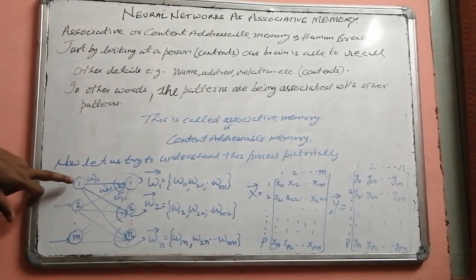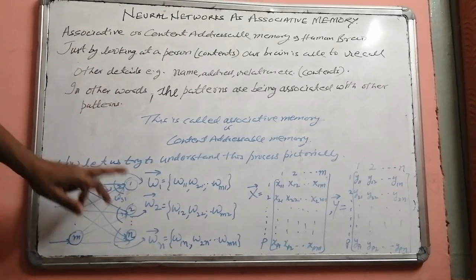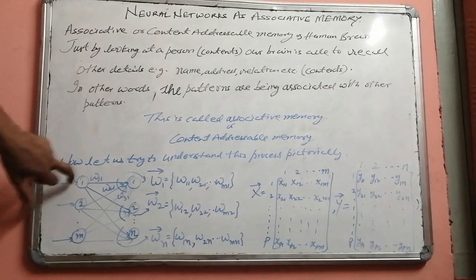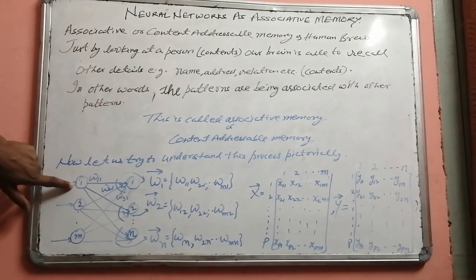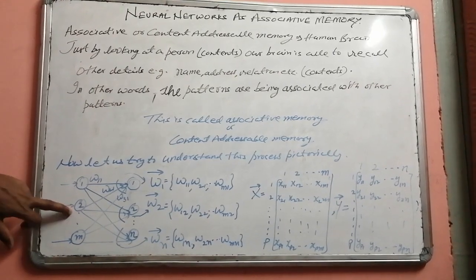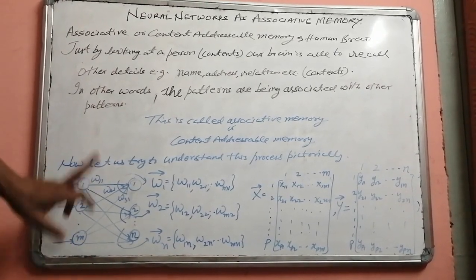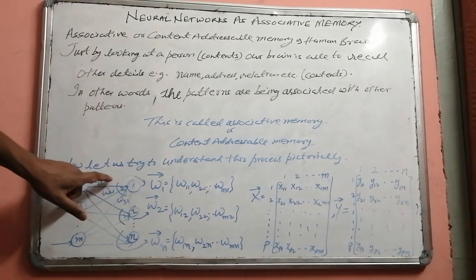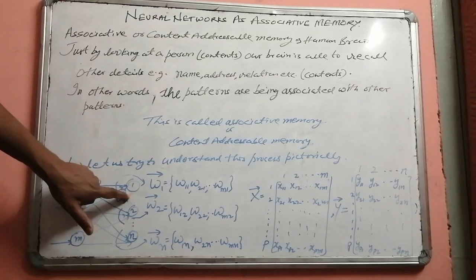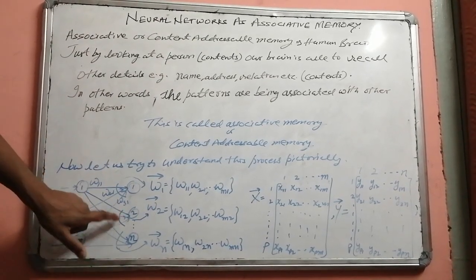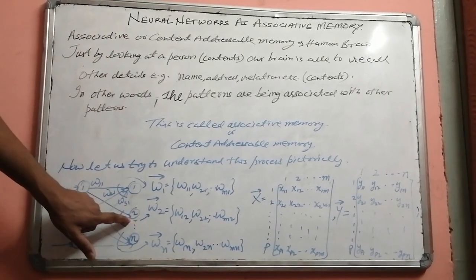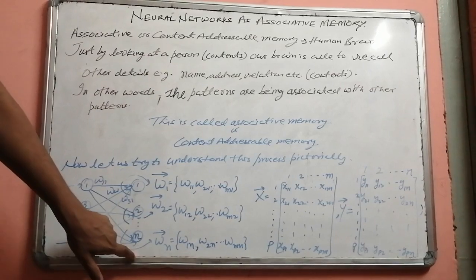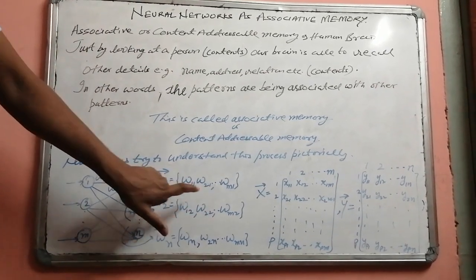The connections are such that each input neuron is connected to each output neuron. W11 denotes the connection between input neuron 1 and output neuron 1. W21 denotes the connection between input neuron 2 and output neuron 1. These weights are named by convention. Weight vector W1 represents all weights connected to output neuron 1, W2 represents all weights connected to output neuron 2, and the Nth vector represents weights connected to the Nth output neuron.